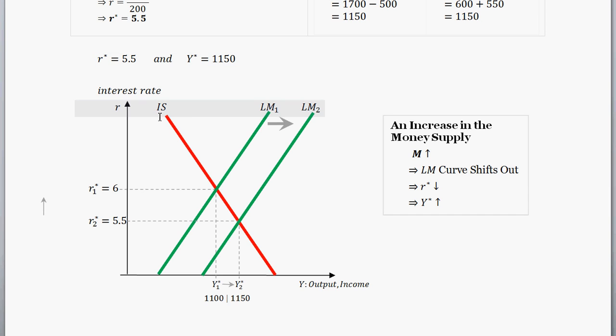So how do we show that graphically? Well, given some IS curve, initial starting point IS curve, that actually doesn't change, so our IS curve. And our initial LM curve, LM sub 1 here, we had equilibrium interest rate of 6%, or just 6. And we had equilibrium output of 1100. That's what we found in the previous part.